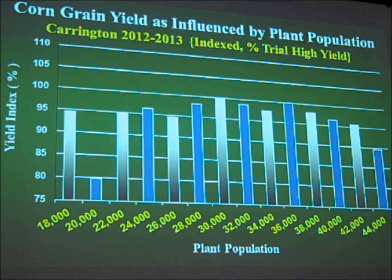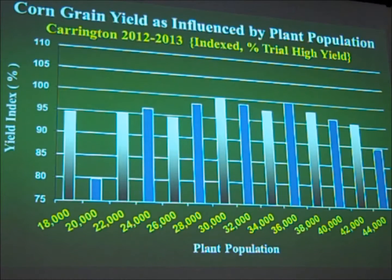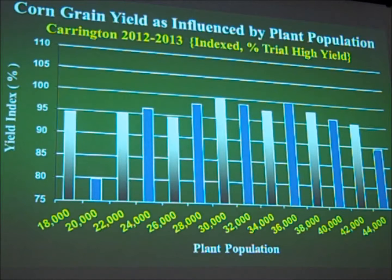Other data from this trial: harvest moisture was generally not significantly influenced in either year due to plant population changes. There were slight numerical differences, but generally not significant — whether at the low end or high end, harvest moisture was very similar. Test weights likewise were very similar. Basically, the significant agronomic traits such as harvest moisture, test weight, and other factors were not influenced by plant population.